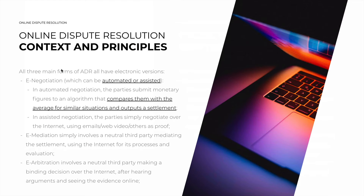All three main forms of ADR have electronic versions. Negotiation exists as e-negotiation, electronic negotiation, or cyber negotiation, which may be automated or assisted. In automated negotiation, both parties submit monetary figures to an algorithm that compares them with the average for similar situations, and then outputs a settlement suggestion.